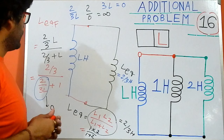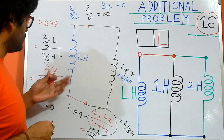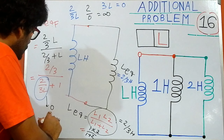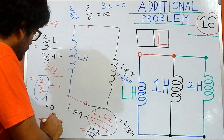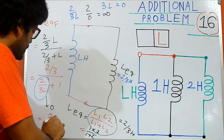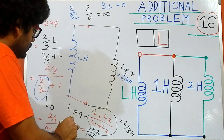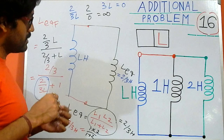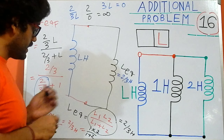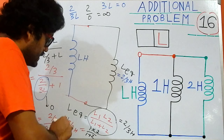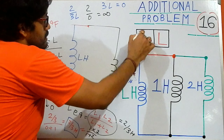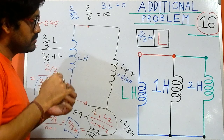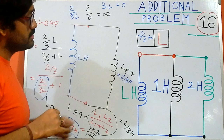So if we put that denominator term equal to zero, we get the final equivalent inductance as 2/3 divided by (0 + 1), which equals 2/3 henry. So the final answer is 2/3 henry.